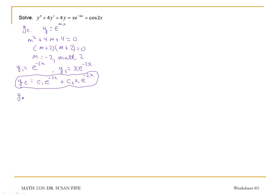Now let's find our particular solution. On our first term, we need to cancel out x e to the negative 2x. Normally we would want ax plus b times e to the negative 2x, but notice this is essentially our complementary solution. So we need to multiply by x until no terms repeat any term in the complementary solution. Even multiplying by x leaves bx e to the negative 2x, which repeats the second term, so here we need to multiply by x squared.